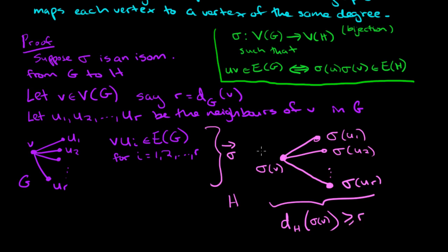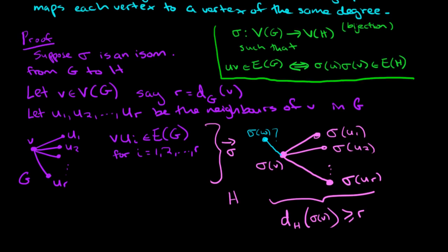Now, how do we know it doesn't have some other vertex here that it's adjacent to? How do we know that there isn't something like that? Maybe we should call this sigma W, right?